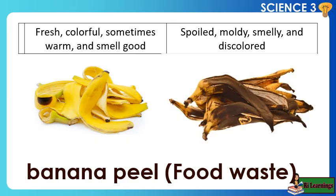Banana peel and food waste: Before disposal — fresh, colorful, sometimes warm, and smells good. After three days of disposal — spoiled, moldy, smelly, and discolored.